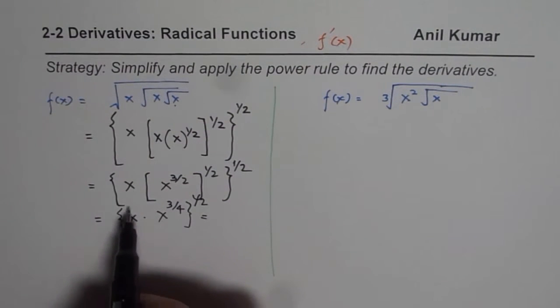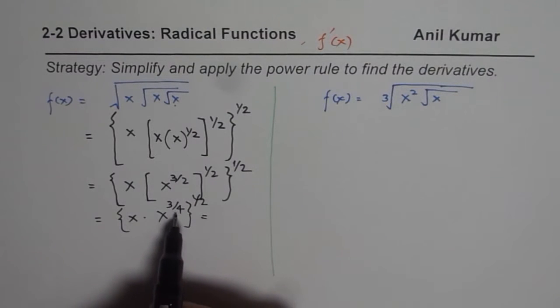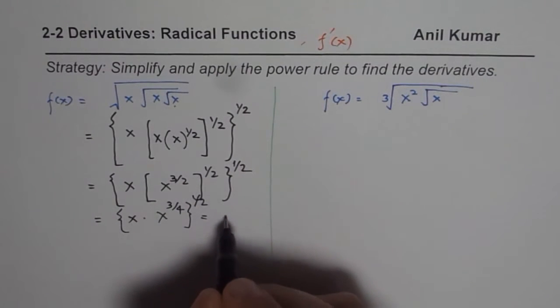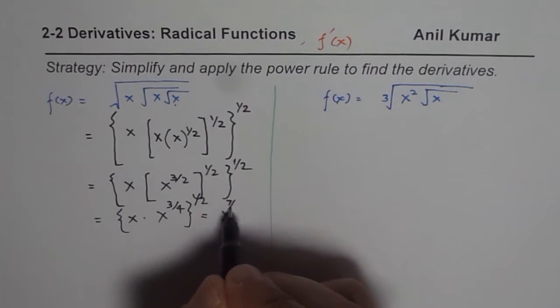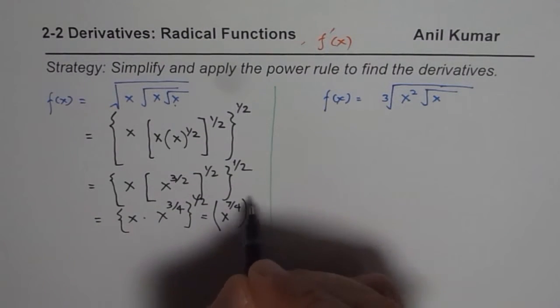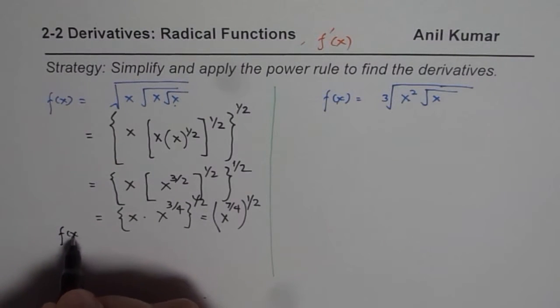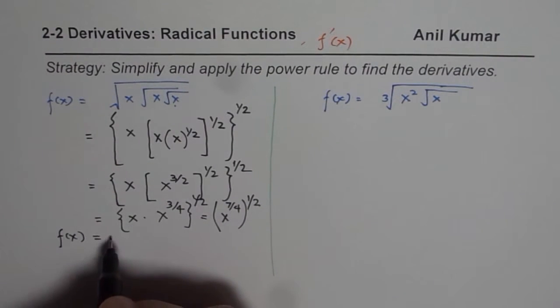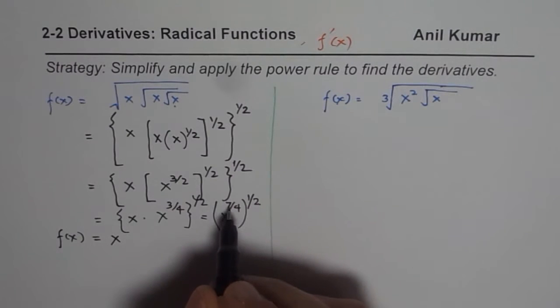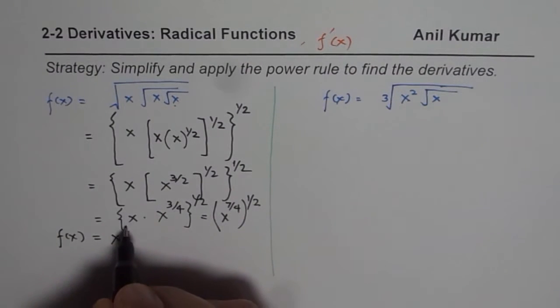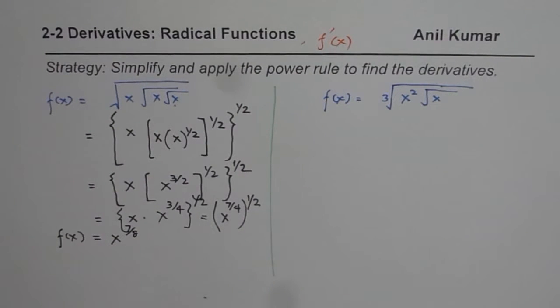And this, when you add 1 and 3 over 4, 4 plus 3 is 7. So you get x to the power of 7 over 4 to the power of half. So ultimately, you get f of x as equals to x to the power of 7 over 8. So we get 7 over 8 as our function.